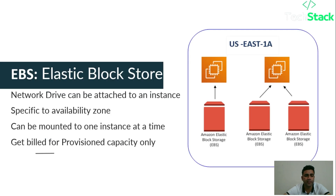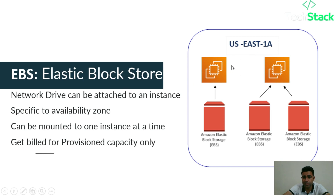The first one is Elastic Block Store, that is EBS. These are network drives that can be attached to one instance at a time, are specific to availability zones, and you only get billed for your provisioned capacity. As you can see in this image, us-east-1a is the AZ in which we are using our EBS volumes — some are linked to one EC2 instance and others to another.